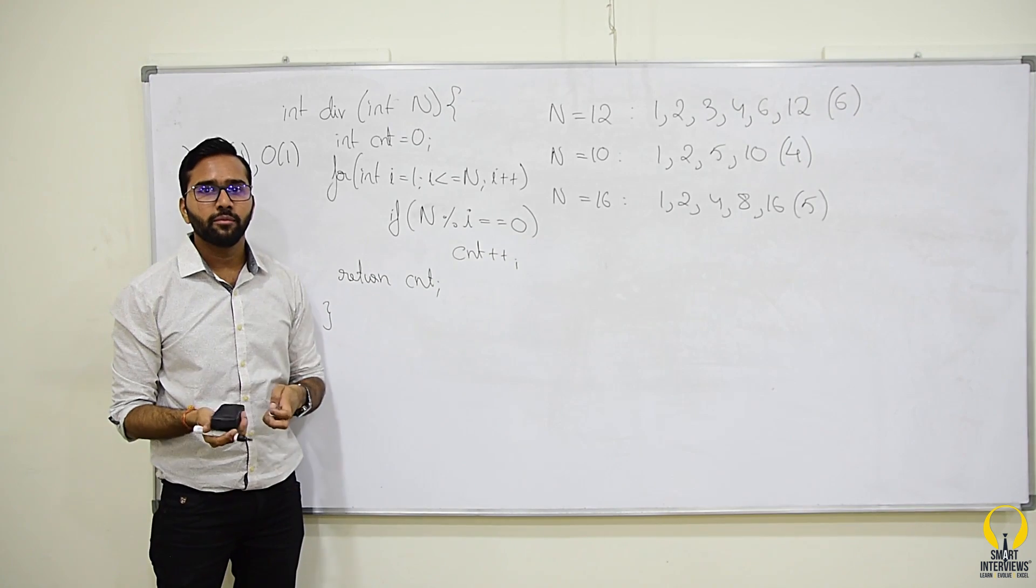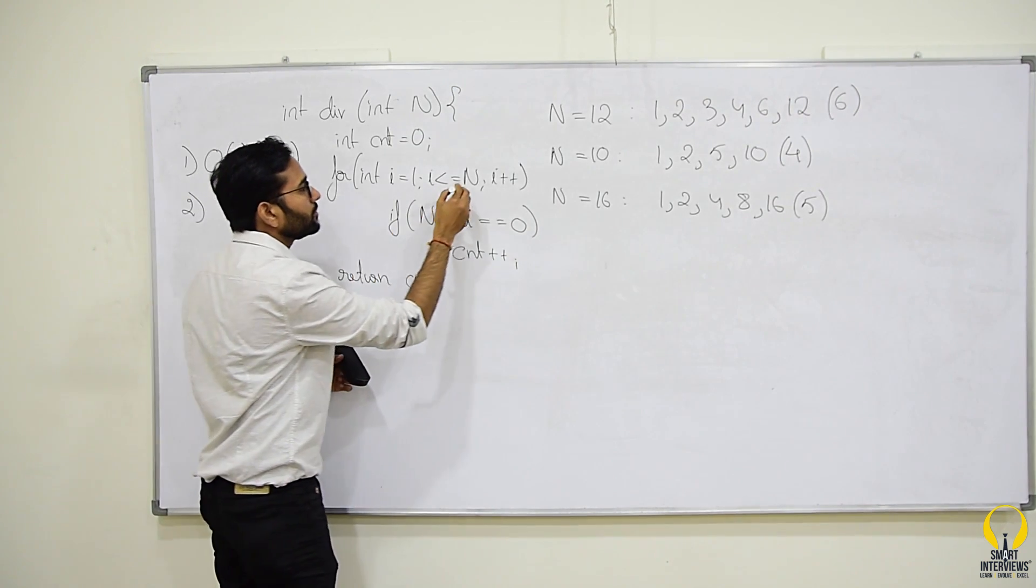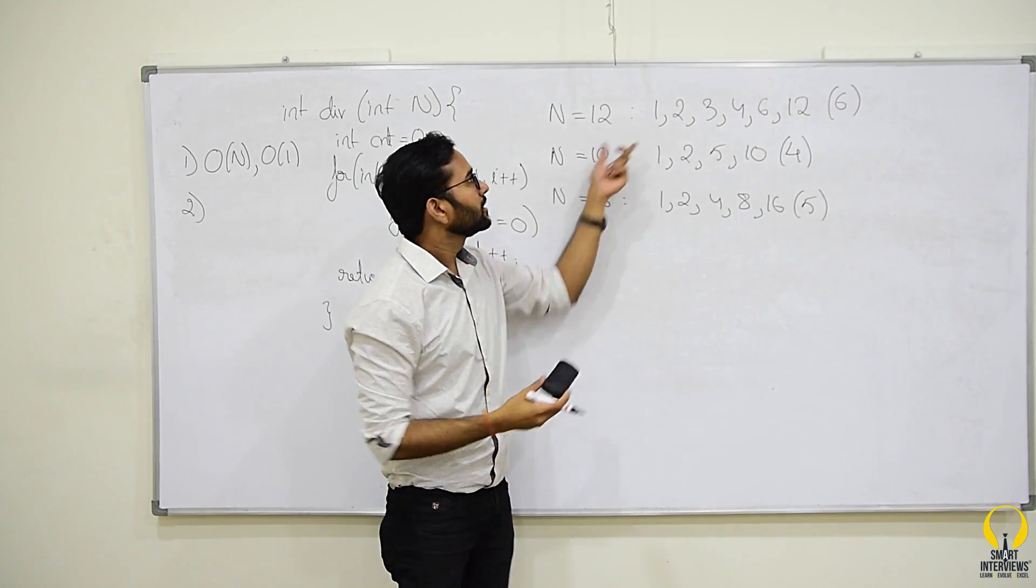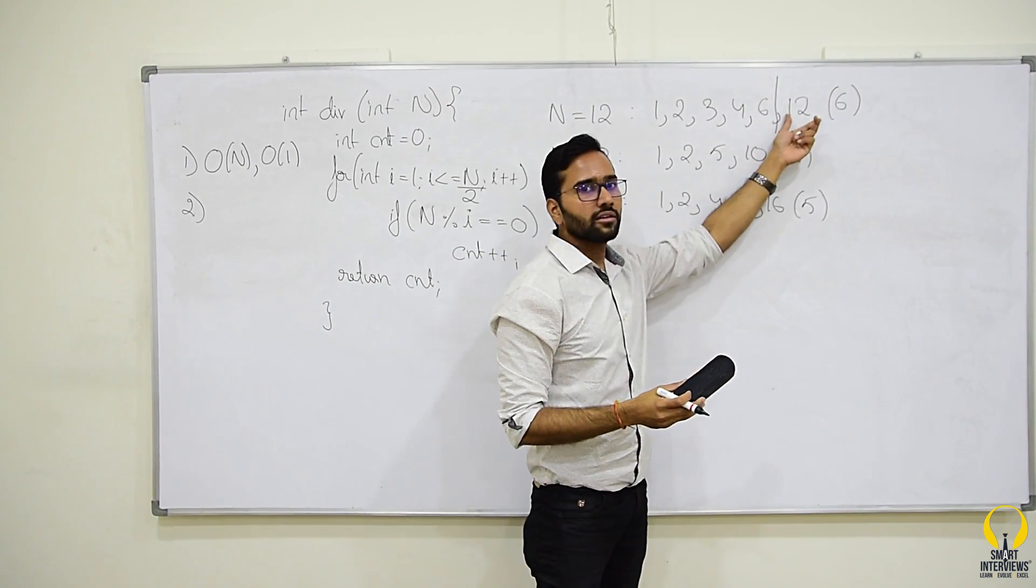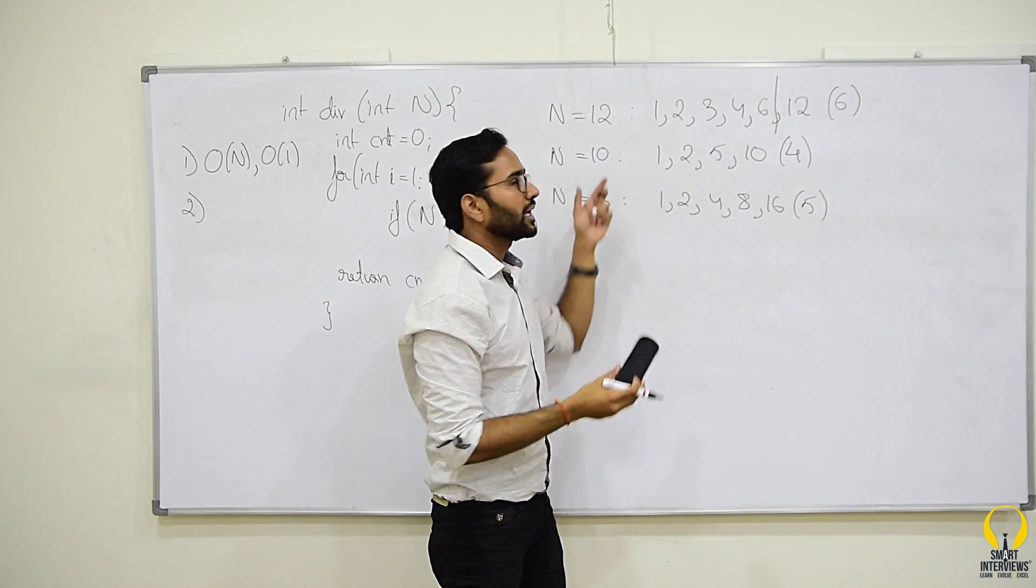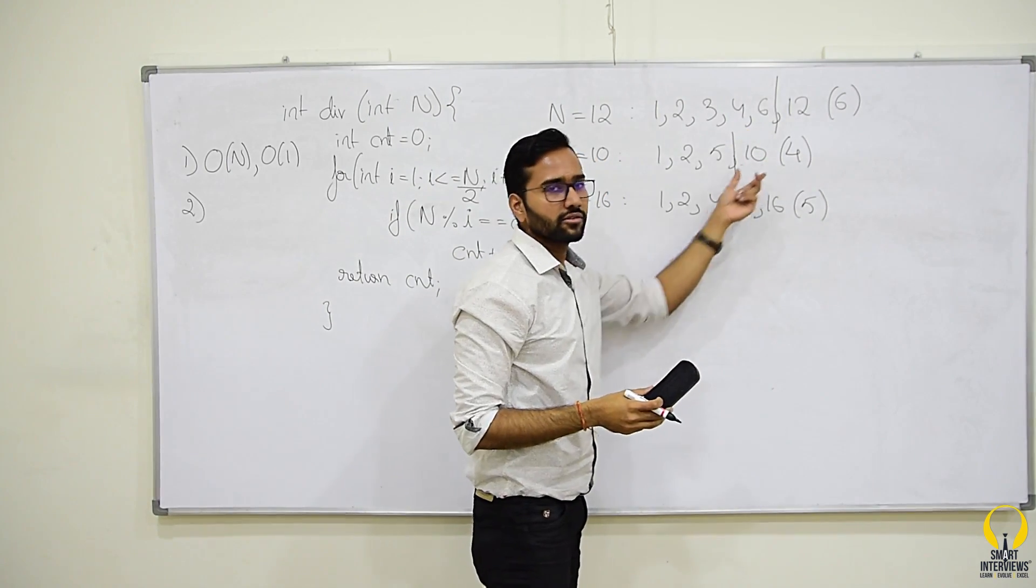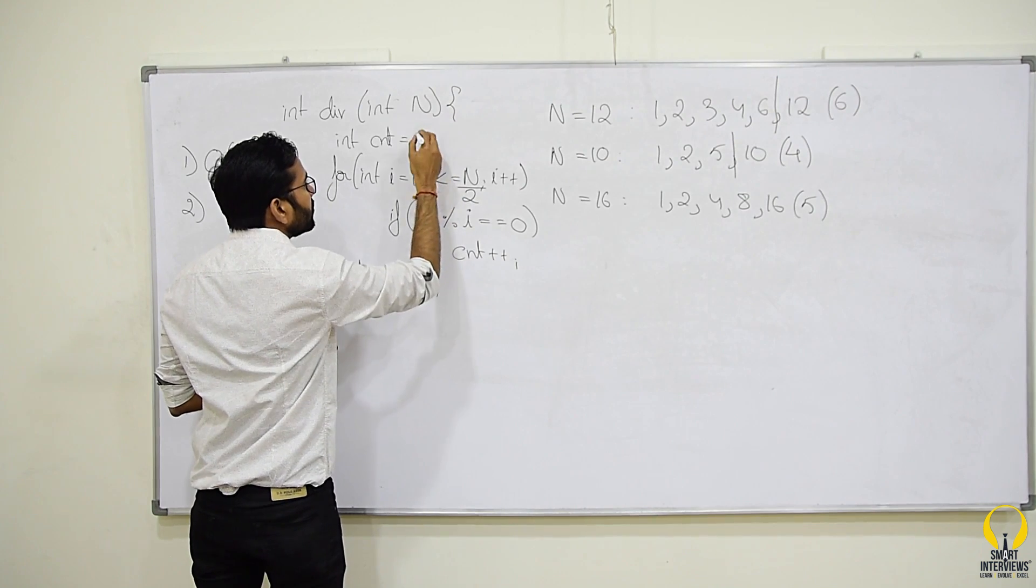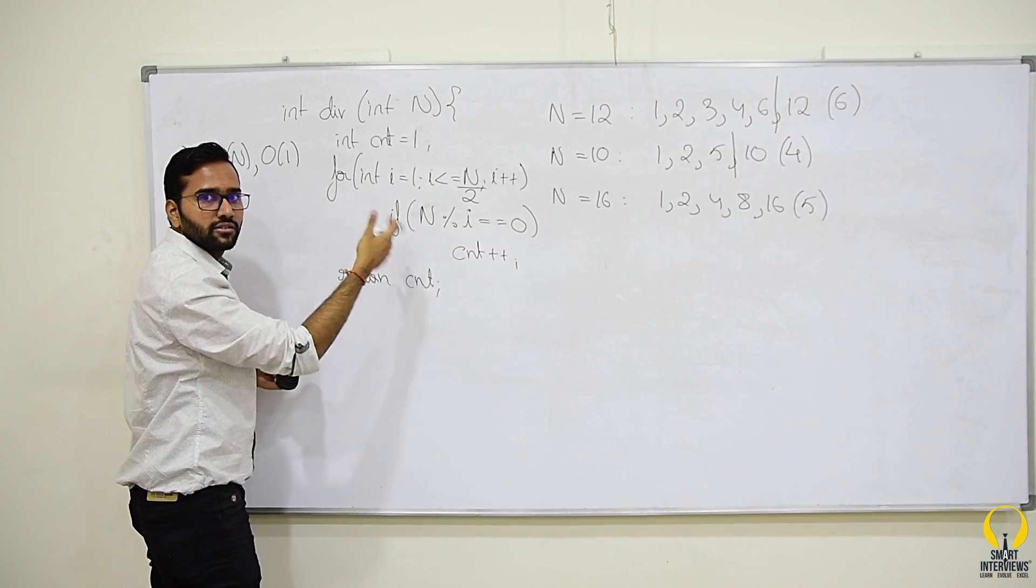Now, how do we optimize it? One way is, we can loop from 1 to n/2 because we know that for any n beyond n/2, the only divisor is n itself. For 10 beyond 5, the only divisor is n itself. If we do this, we can initialize the count by 1 because n is always divisor and we can do the same thing.